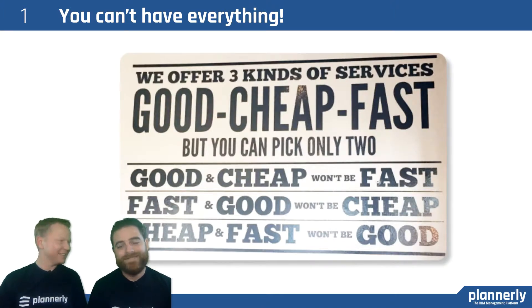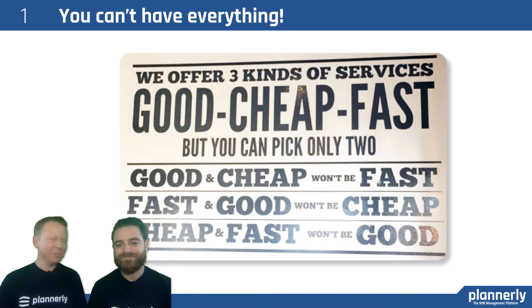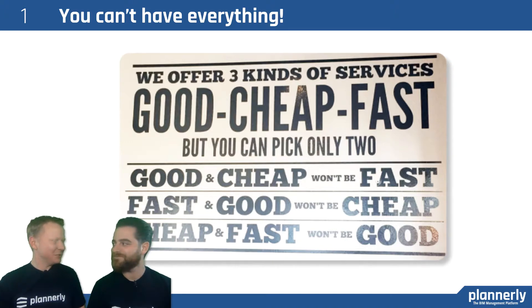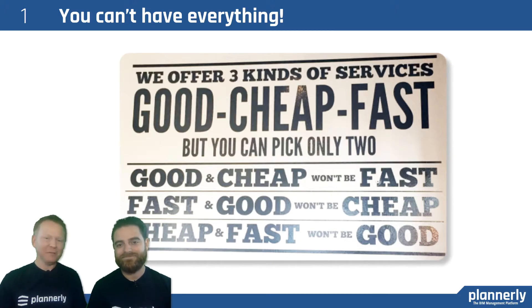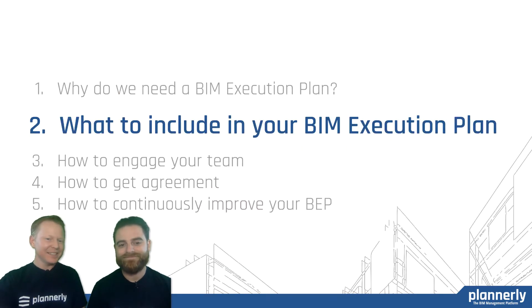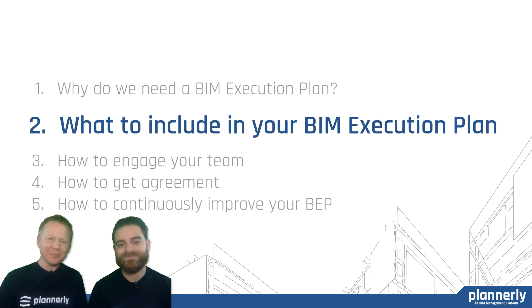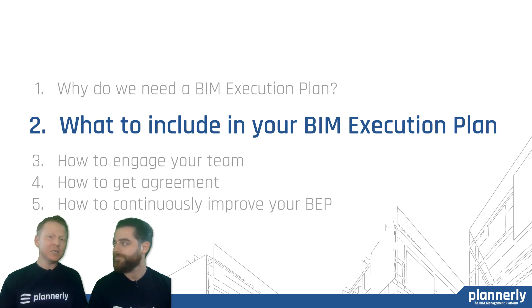So you can't have all three. A lot of people would know this sign: good, fast, and cheap — you can pick two of them. You can have good and cheap but you can't have it fast. You can have fast and good but you can't have it cheap. And you can have cheap and fast but you can't have it good. That's why we need an execution plan — in order to be able to align expectations.